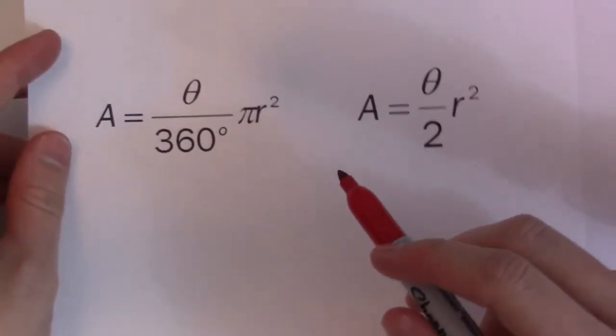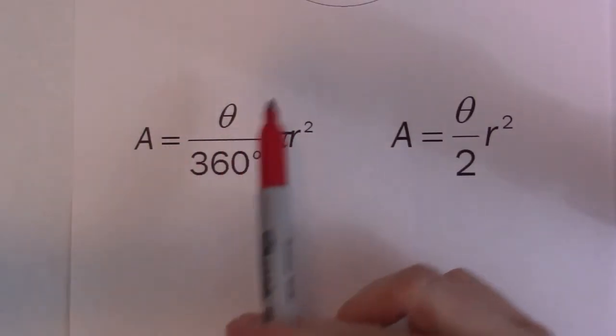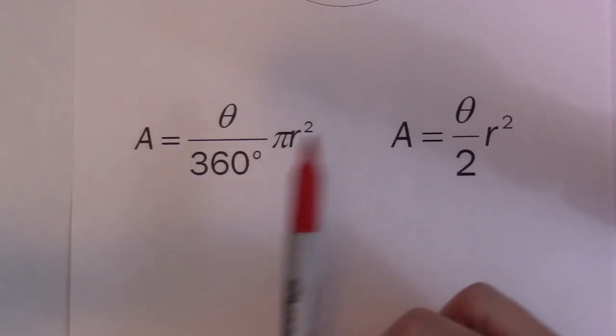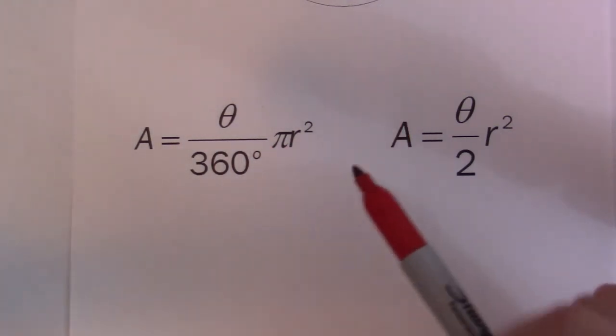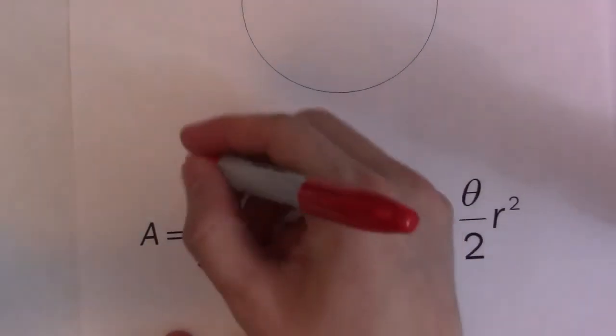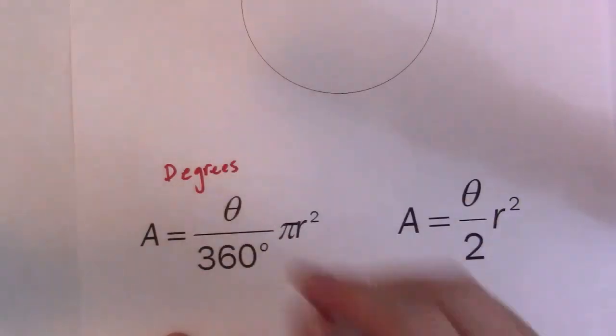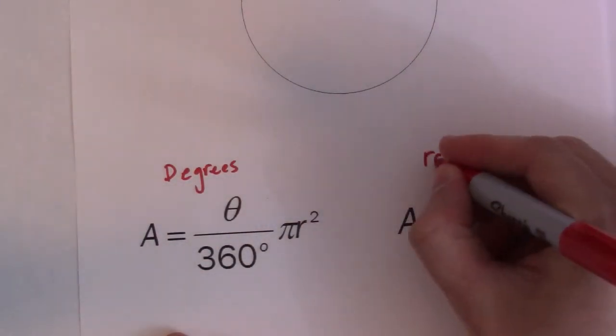There are two basic formulas for central angle. I've got them written here and typed up already. These find the exact same thing, but you need to know them because if you have different angles in different units, this one is for degrees, and this one is for radians.